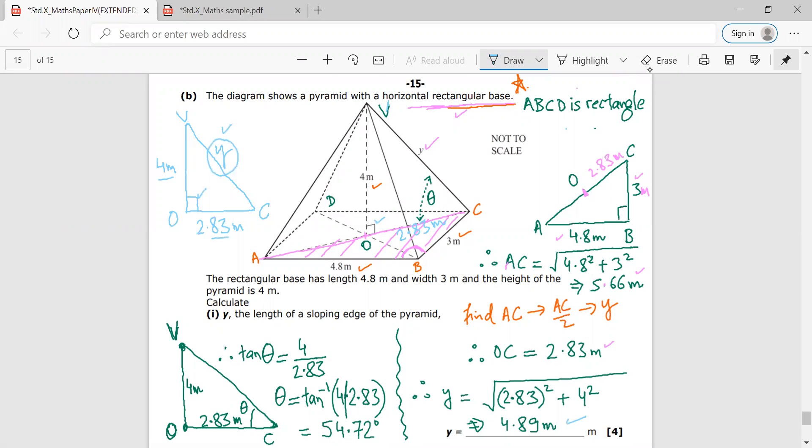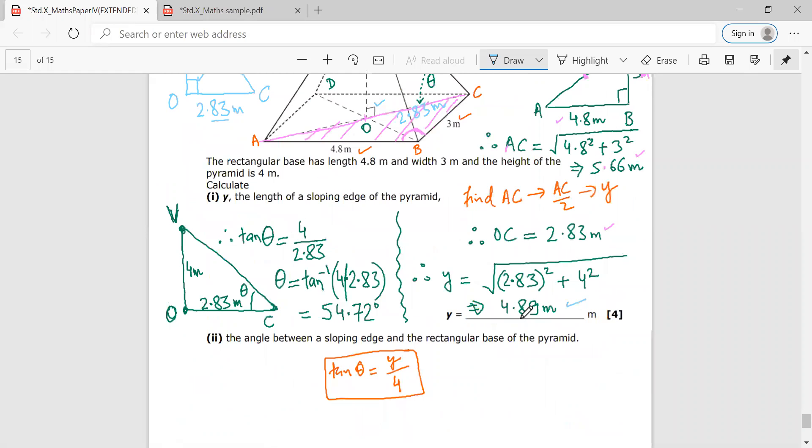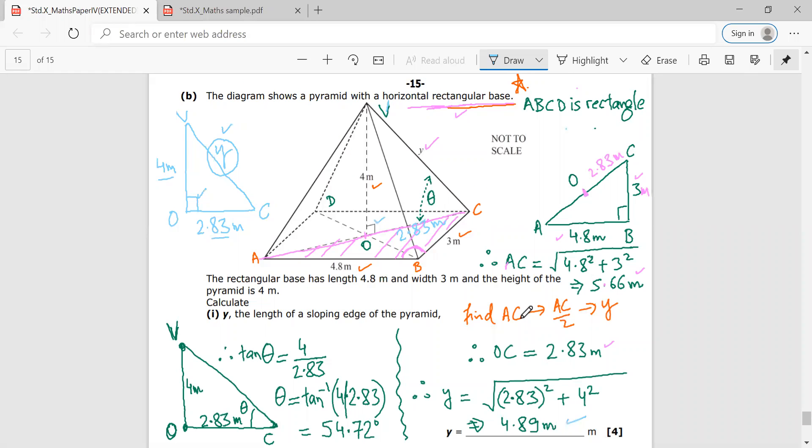No. Now, in the second part of the question, they would be asking me the angle between the sloping edge and the rectangular base of the pyramid. So let us try to understand this. I need to find the angle between this sloping edge and the rectangular base. So if you look carefully, in the same triangle VOC,